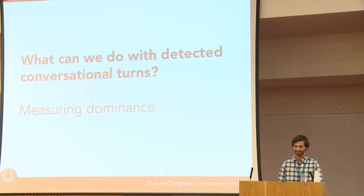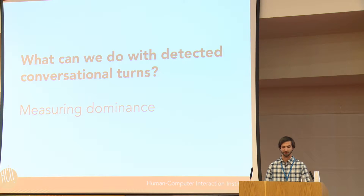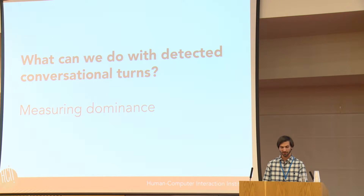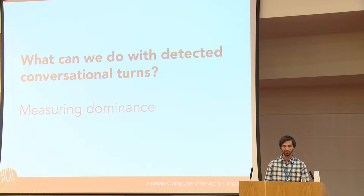Now that we can detect conversational turns, what can we do with knowing participants' turn-taking behavior? Turn-taking might provide an indication of what group dynamics are at play. By knowing when and how long participants talk, we can abstract turn-taking behavior into metrics such as dominance. Prior research has shown that dominant behavior directly affects group dynamics. For example, a dominating participant may negatively affect a group by limiting the opportunity for others to speak. However, dominance is not always negative—it has been shown to be a characteristic of a leader or mediator as well.